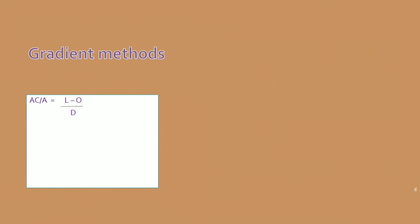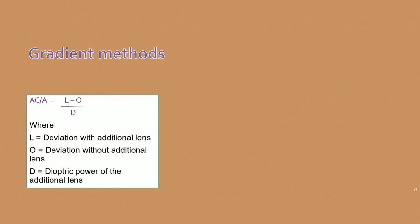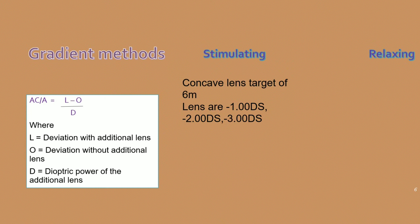Coming back to the gradient method: AC/A equals L minus O divided by D, where L is deviation with the additional lens, O is deviation without the additional lens, and D is the power of the additional lens. There are two different ways: stimulating with concave minus lens (minus 1, minus 2, minus 3) and relaxing with convex lens (plus 1, plus 2, plus 3). Measure ocular deviations with prism cover test.